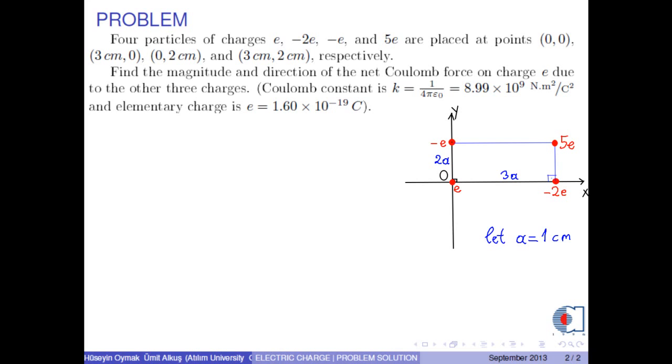Find the magnitude and direction of the net Coulomb force on charge E due to the other three charges. Coulomb constant is K equal to 8.99 times 10 to 9 Nm squared over coulomb squared, and elementary charge is E equals 1.6 times 10 to negative 19 coulombs.